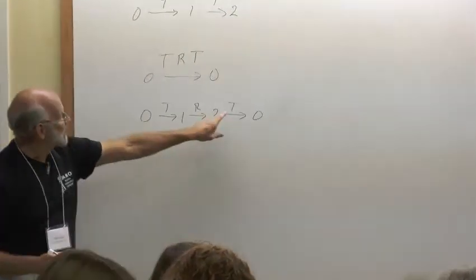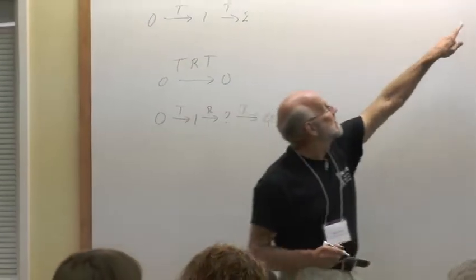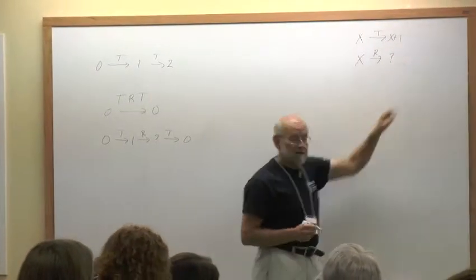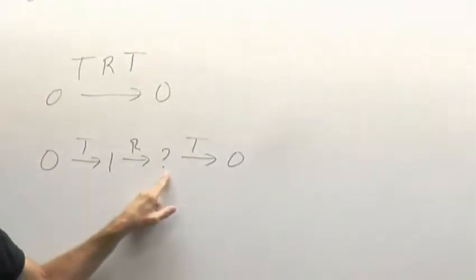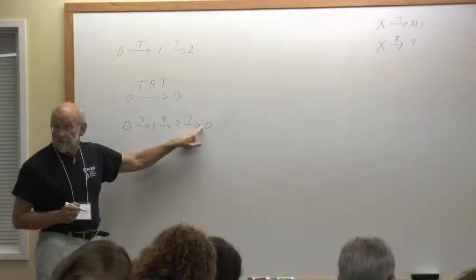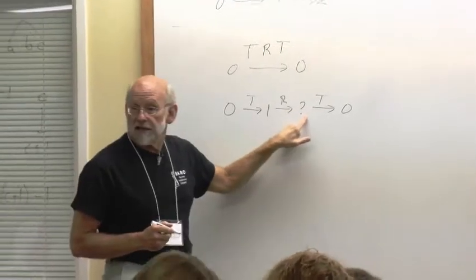Twist always adds 1. So I'm adding 1 to something to get to 0. So this something here must be negative 1.